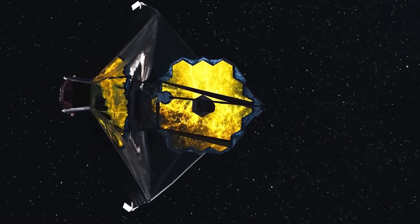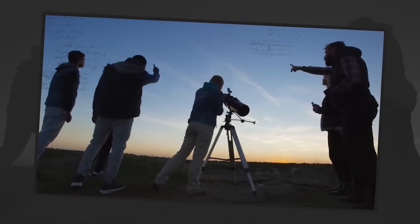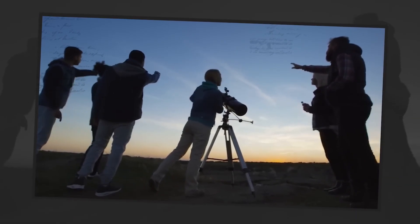But then came James Webb with its massive 6.5 meter mirror and infrared vision designed to detect the stretched-out light of the earliest galaxies. Almost immediately, Webb shattered Hubble's record.